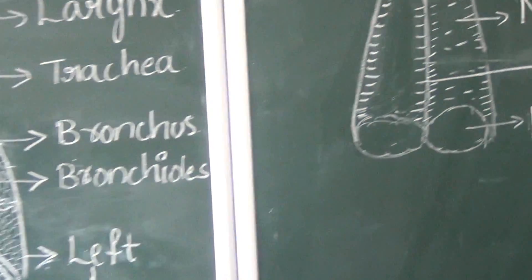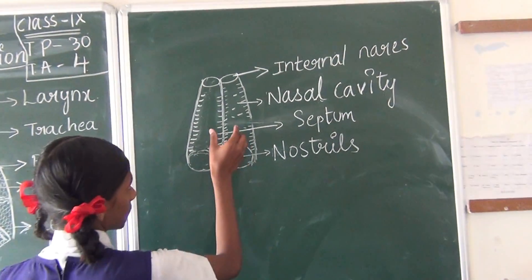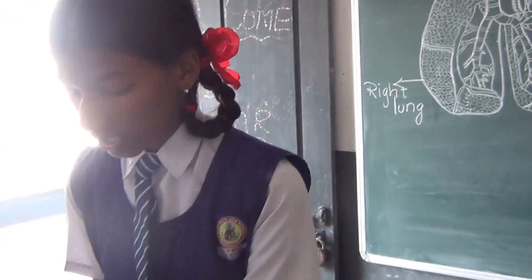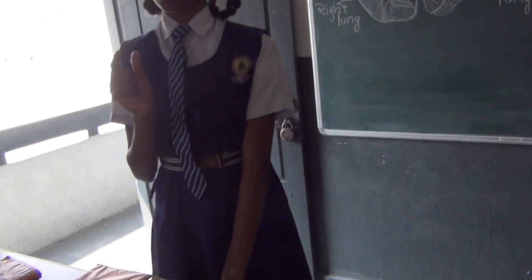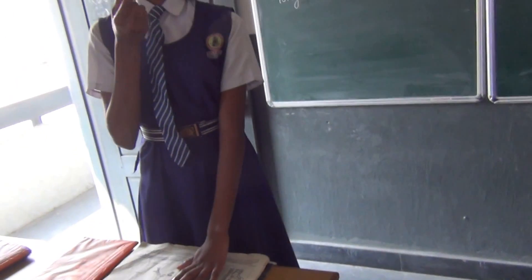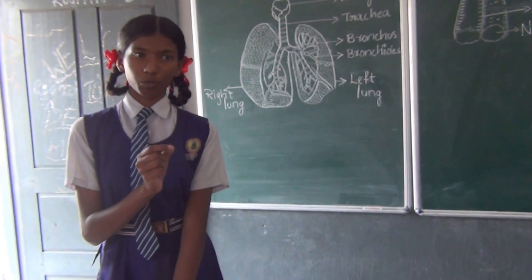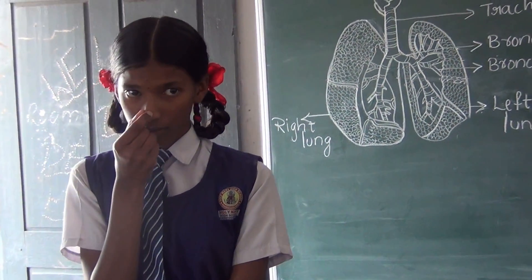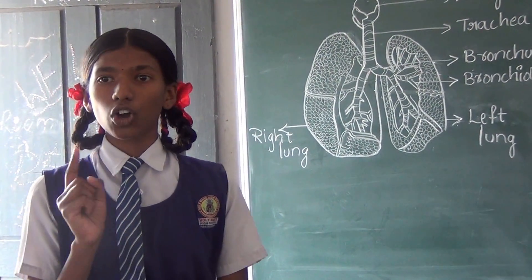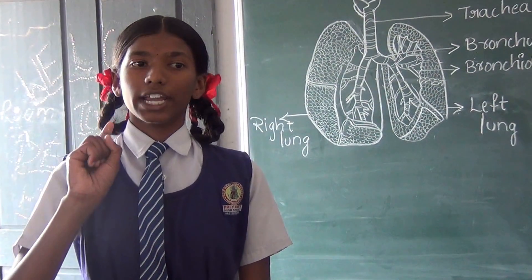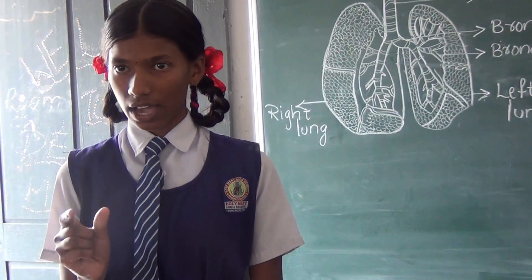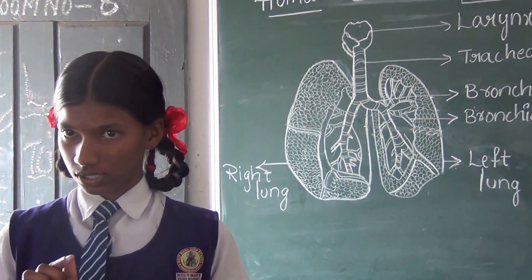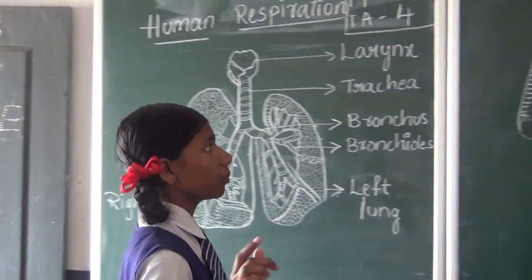Then coming to nasal cavities. We have nasal cavities. It is a passage for air. And we have a septum which separates the nasal cavities — it is a cartilaginous bone, a soft bone, and it is movable. We can move our septum. We have a plate called palate.